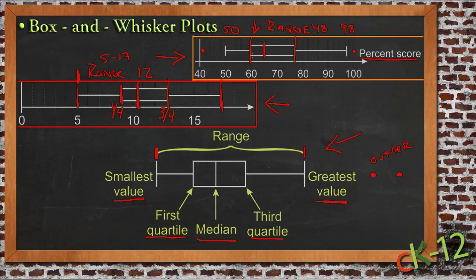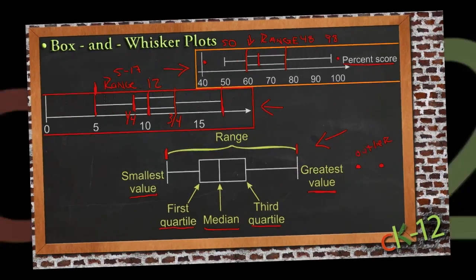But they weren't really representative of most of the data. So sometimes you'll see these individual points on a box and whisker plot, and that's what those represent.